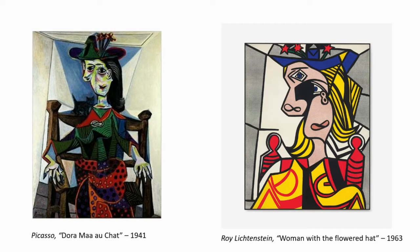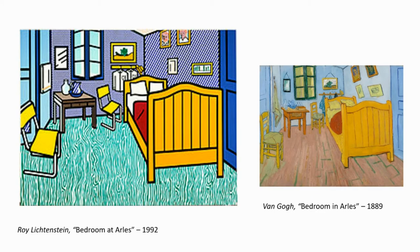I love this work — Woman with the Flowered Hat, done in 1963, which is an appropriation of Dora Maar au Chat by Picasso from 1941. Then there's Van Gogh's Bedroom, where Lichtenstein appropriated the work and interestingly updated the chairs to groovy 1960s chairs — someone can tell me the name of those chairs in the comments — and neatened up the clothing.